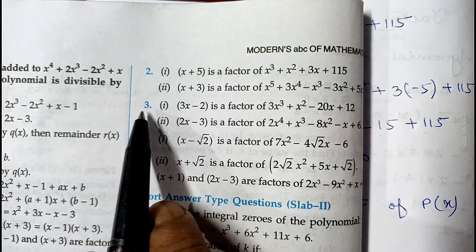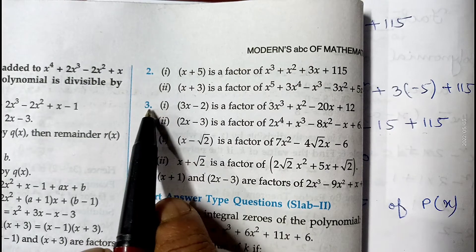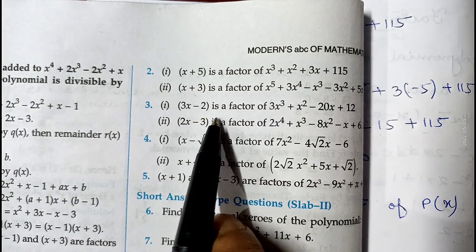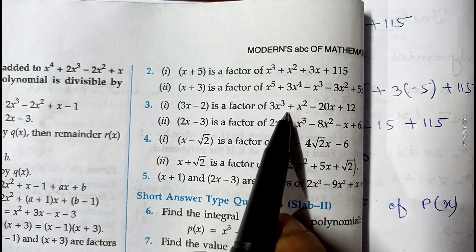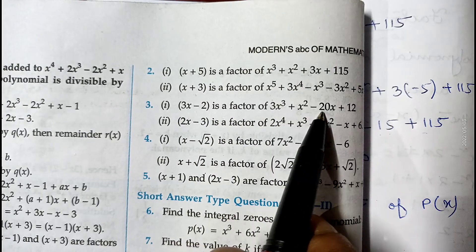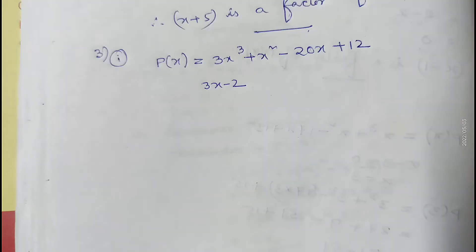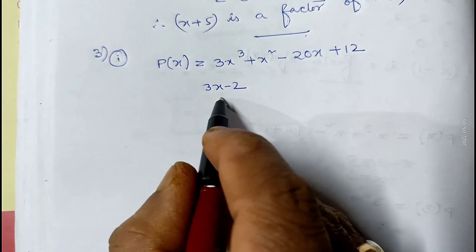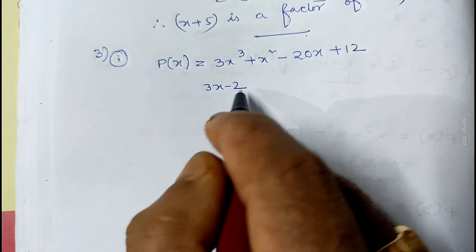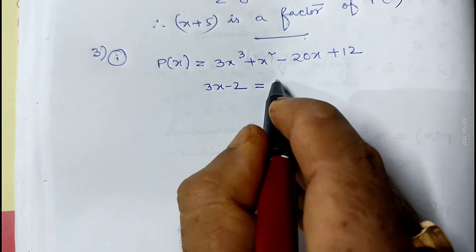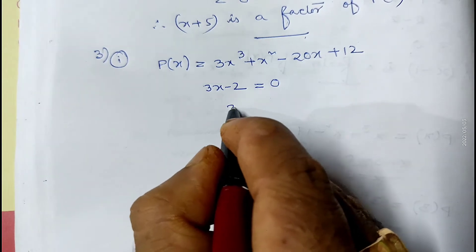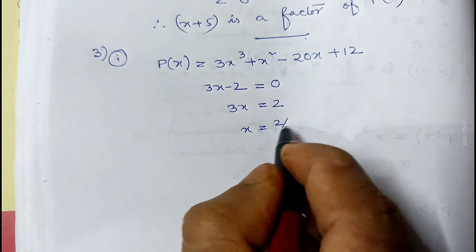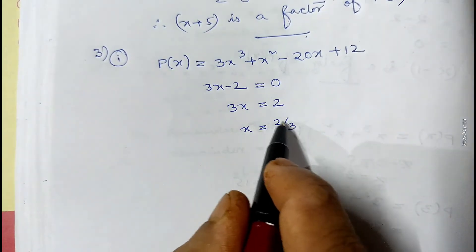Let me show the first part of question number 3. We have to prove that 3x minus 2 is a factor of 3x cubed plus x squared minus 20x plus 12. This is the given polynomial. We make 3x minus 2 equal to 0, so 3x equals 2, giving x equals 2 by 3.